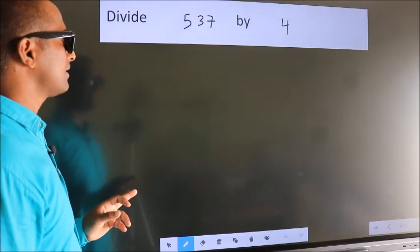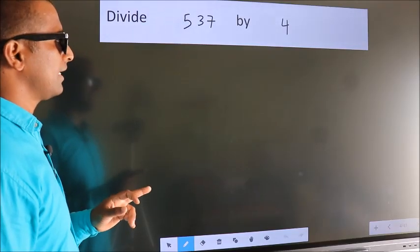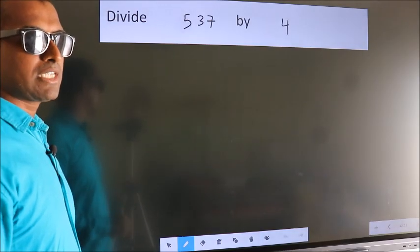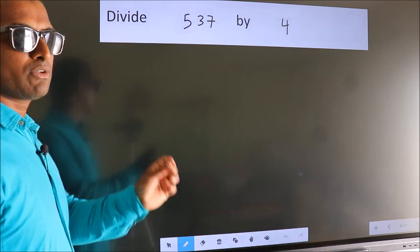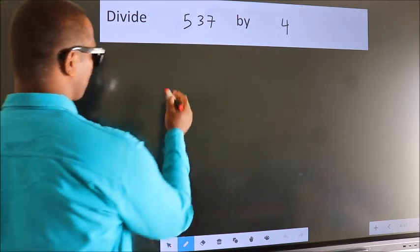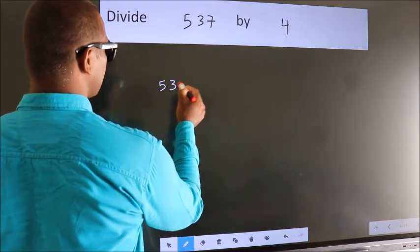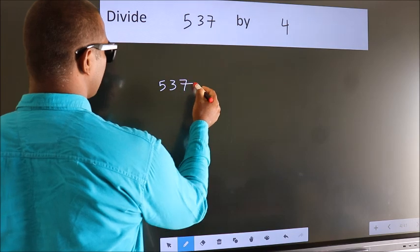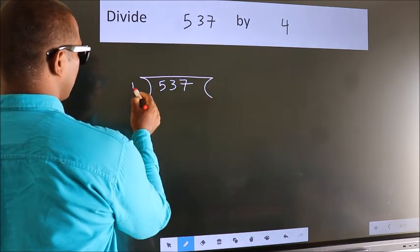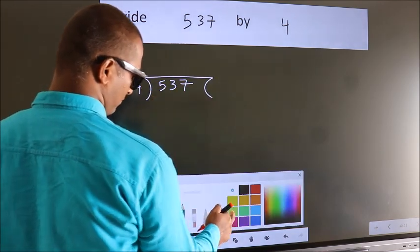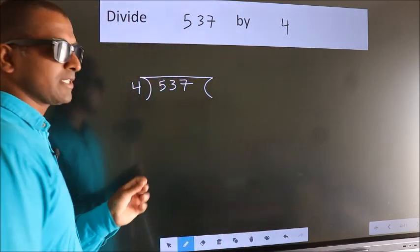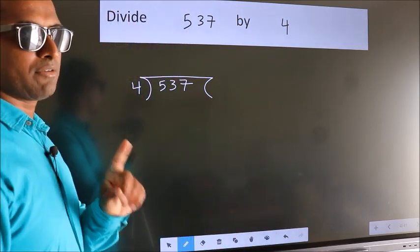Divide 537 by 4. To do this division, we should frame it in this way: 537 here, 4 here. This is your step 1.